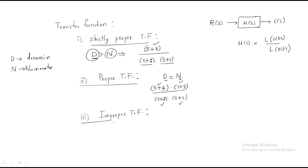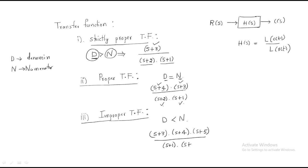The third type is the improper transfer function, which is the reverse: the denominator is less than the numerator. For example, take (s+3)(s+4)(s+5) / [(s+1)(s+2)]. Here in the denominator we have two poles and in the numerator we have three zeros, so the number of poles is less than the number of zeros — that's why it is called the improper transfer function.